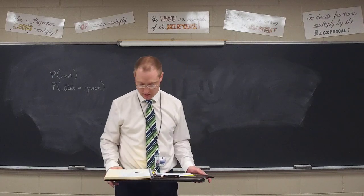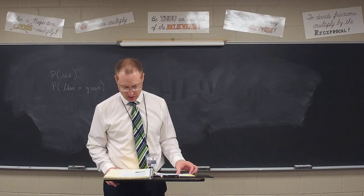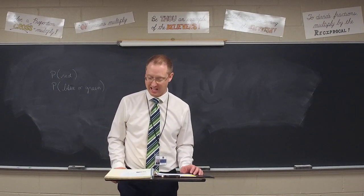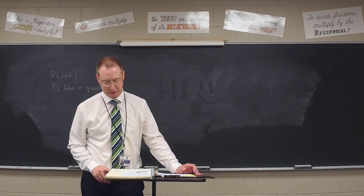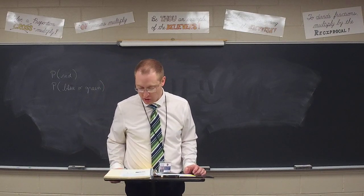Number seven. Which measure of center is the middle value of a ranked list? Kirsten. That is the median. Very good. Number eight. At a burrito restaurant, customers may choose corn or wheat tortilla, black or pinto beans, chicken, ground beef, or steak as the meat. And how many different burritos could a person make? Joel. Twelve.